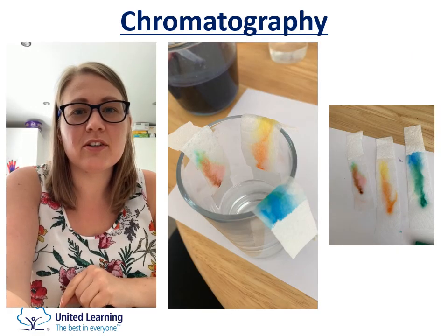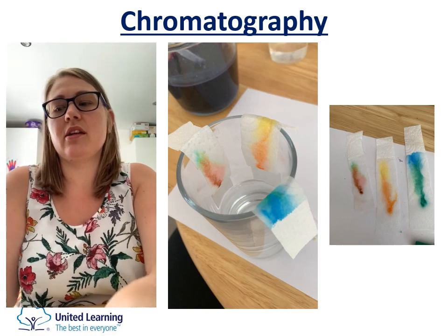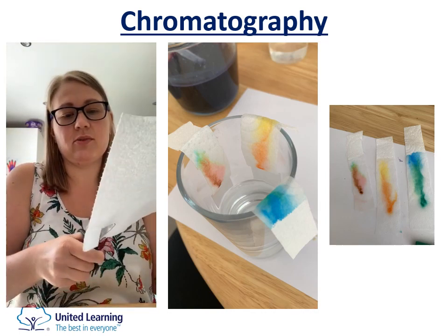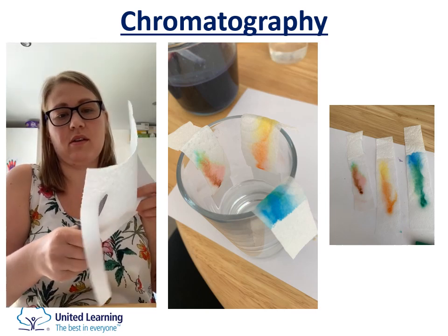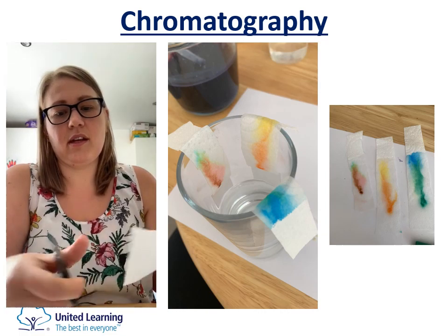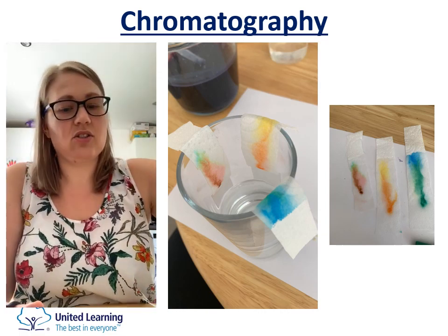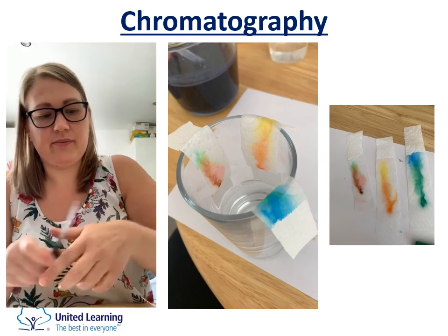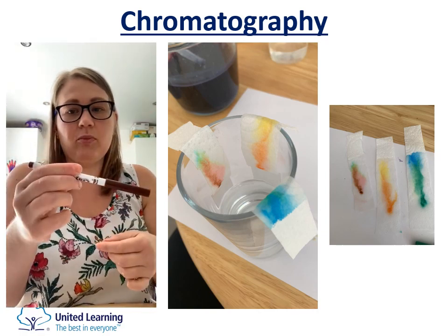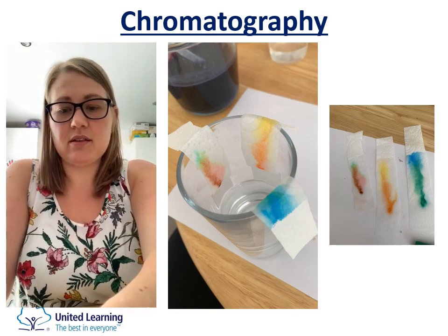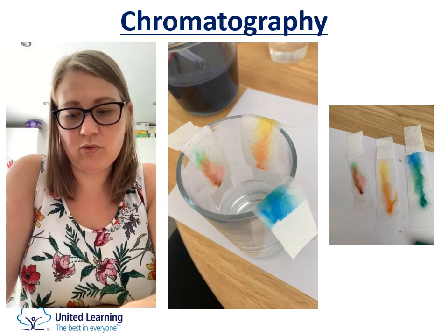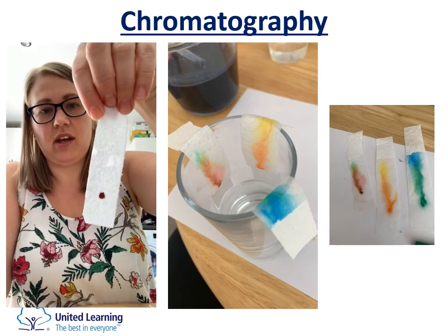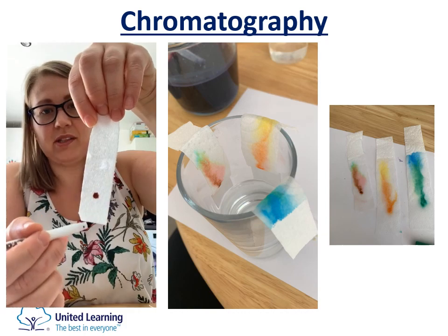What we're going to have a look at now is some chromatography, and you can have a go at this at home. All you need is a piece of kitchen roll — just cut it into some thin strips. The glass I'm going to use with water is this size, so I'm going to cut the strip to just over half. Then get a normal washable felt-tip pen and draw a dot about a centimetre or two up from the bottom of the strip.